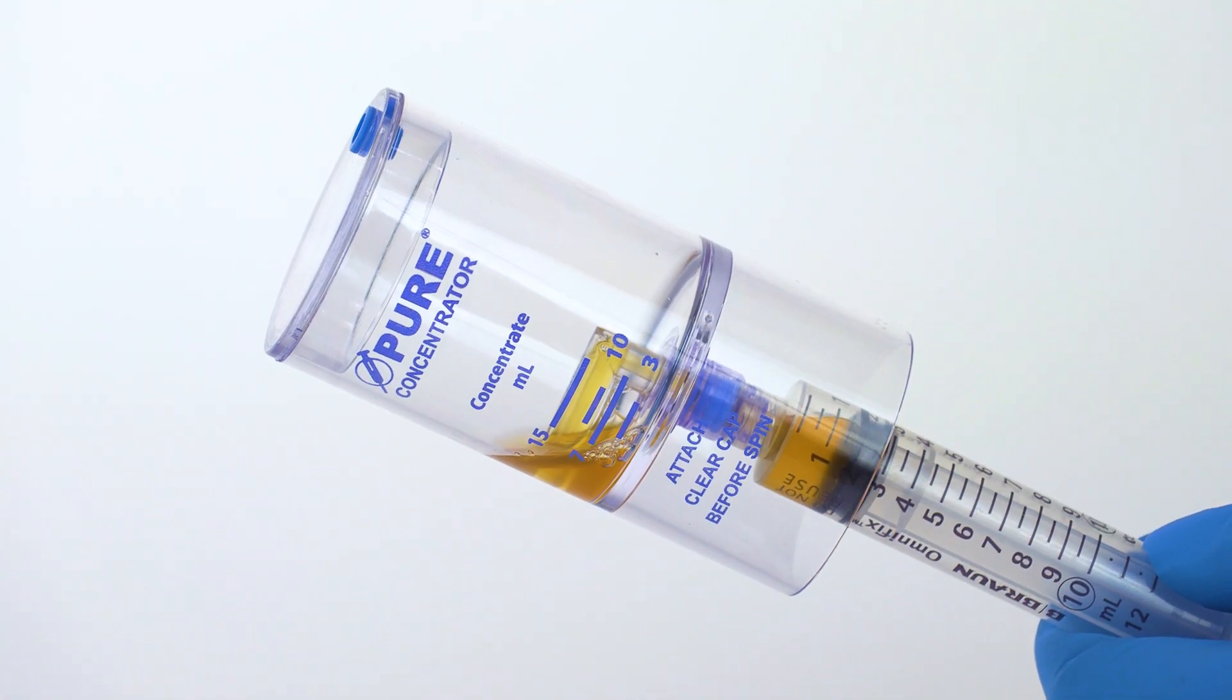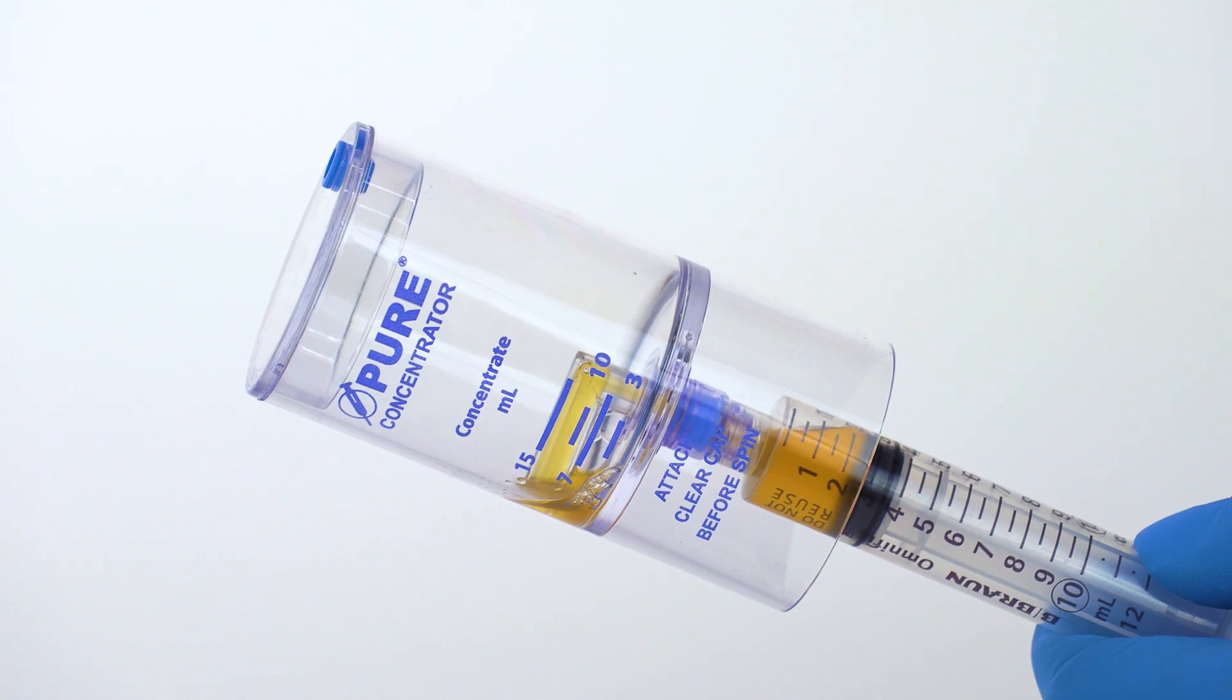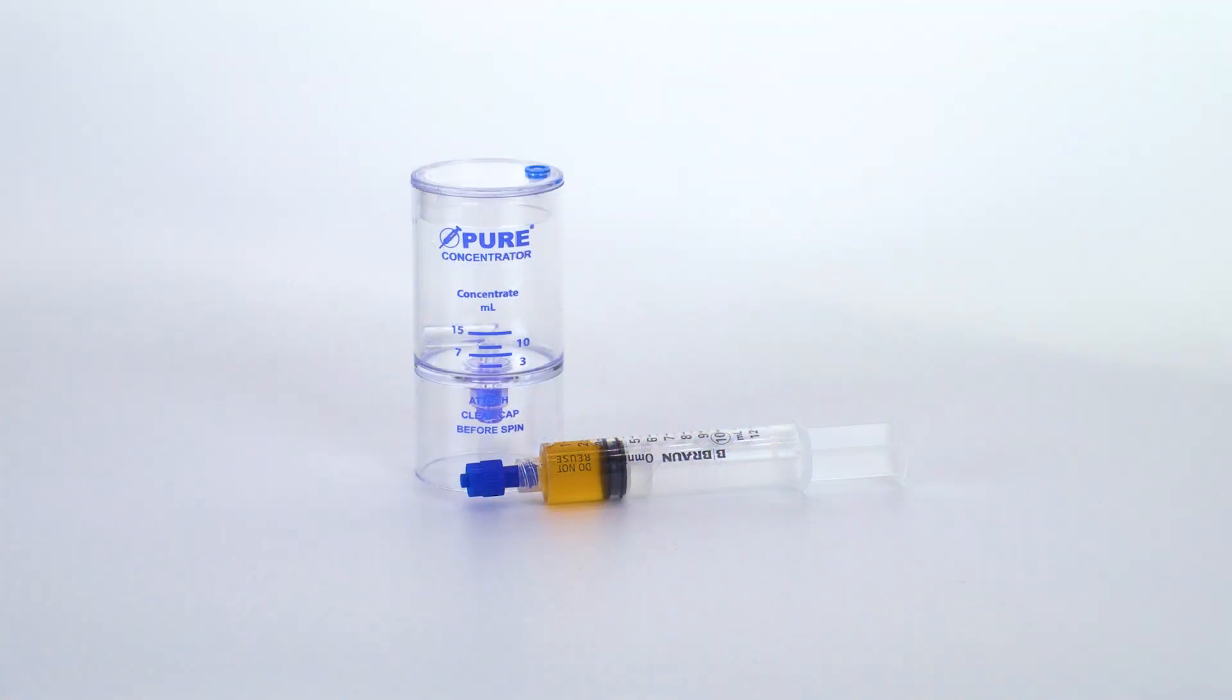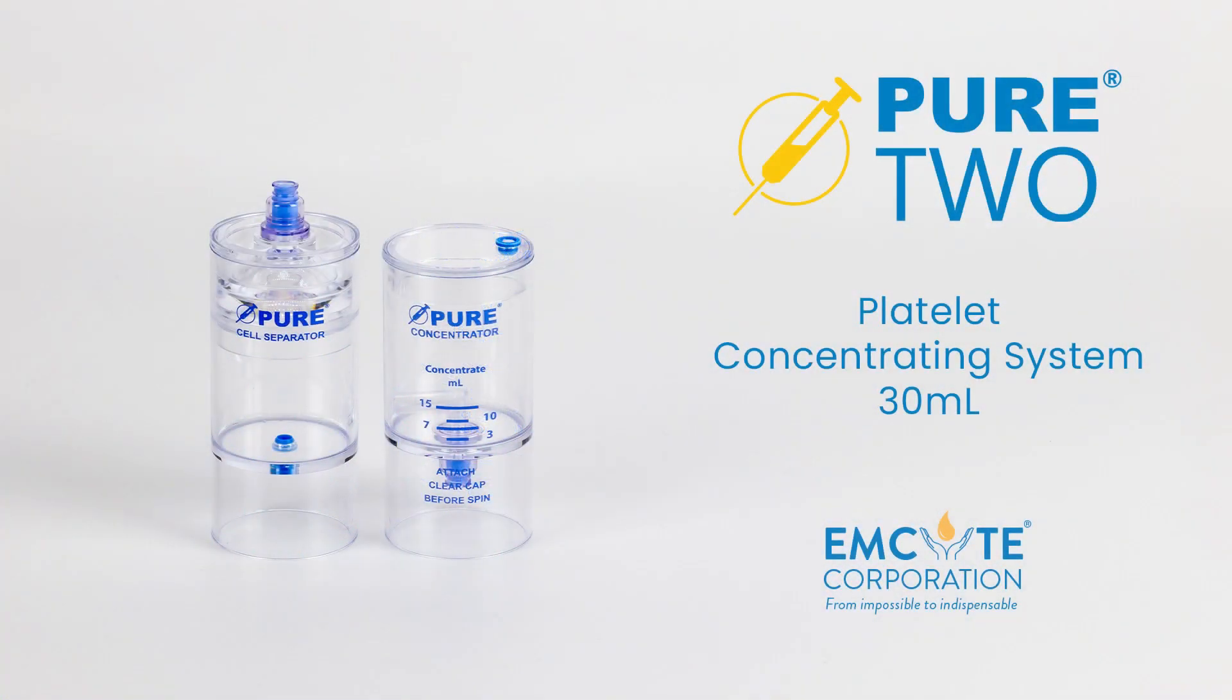Attach the 12 milliliter syringe to the needleless port and tilt the device to aspirate the PRP. This concludes our processing video for mSight's Pure 2 processing system.